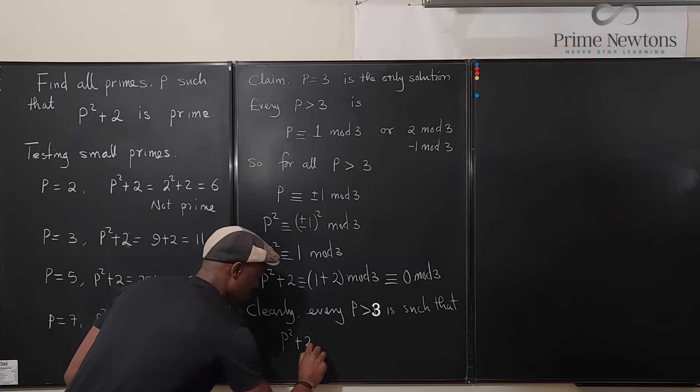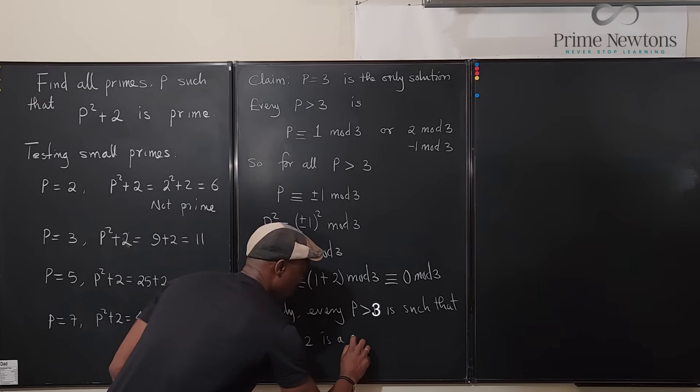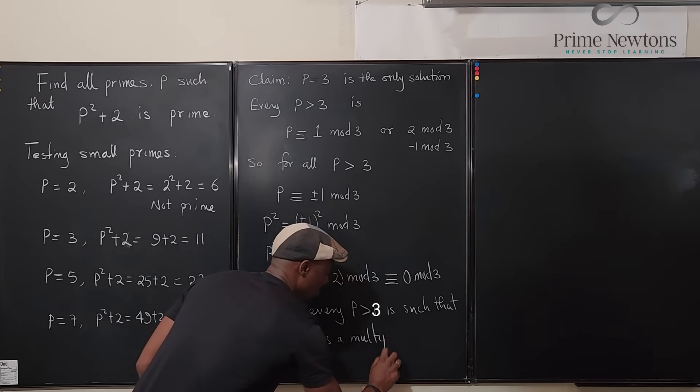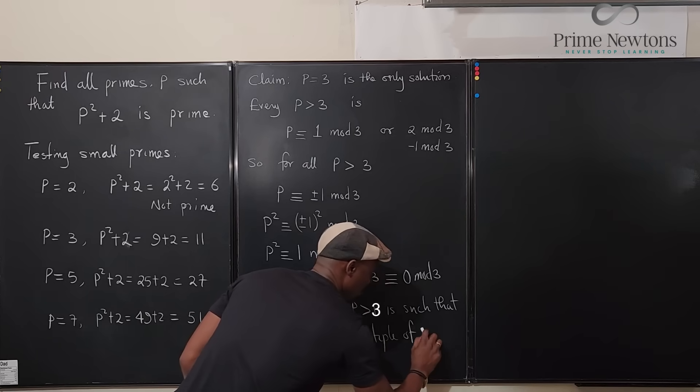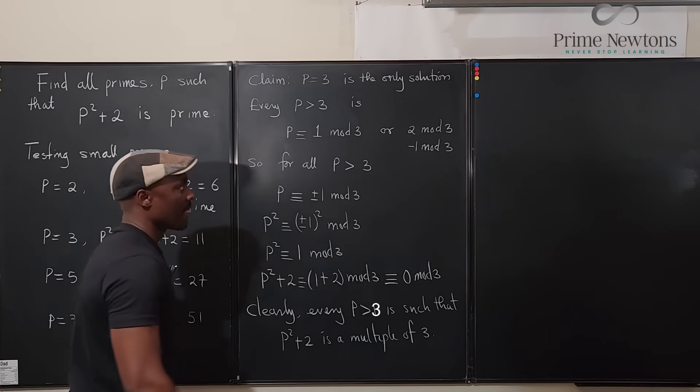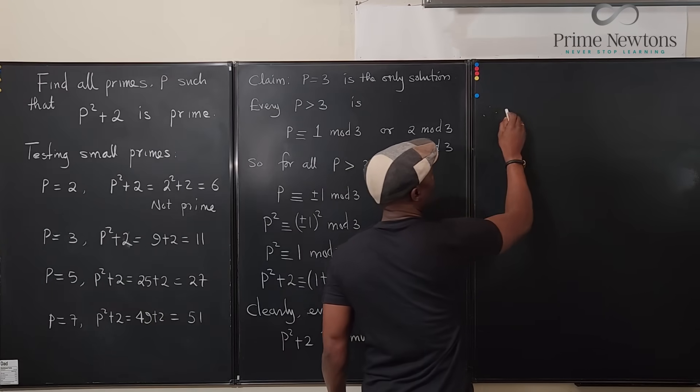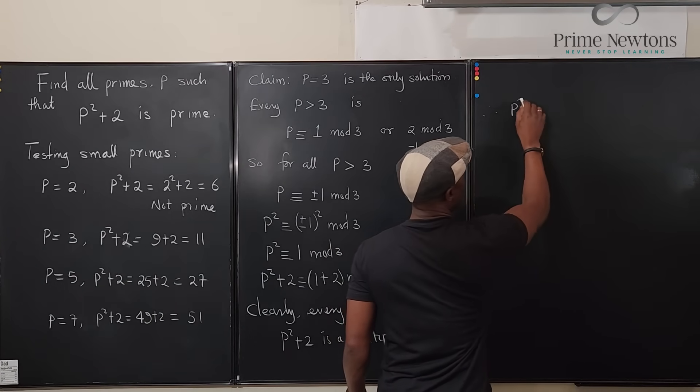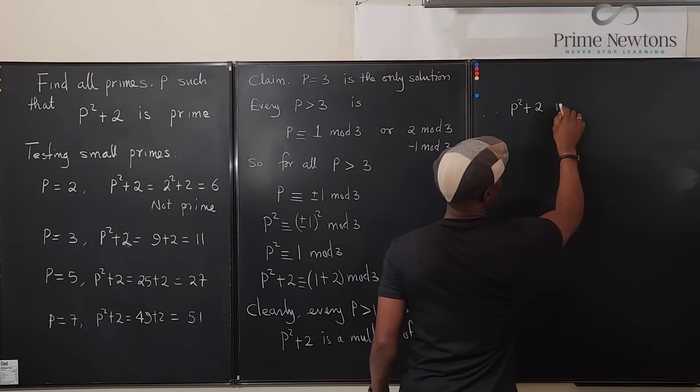Clearly every p greater than 3 is such that the number is going to be divisible by 3. P squared plus 2 is a multiple of 3.